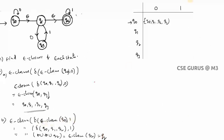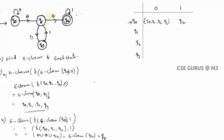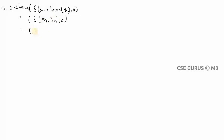For Q1 on input 0: e-closure(Q1) = {Q1, Q2}. Now δ(Q1, 0) = Q3, δ(Q2, 0) = nothing. So we get {Q3}. Then e-closure(Q3) = {Q3}. Therefore the result for Q1 on input 0 is {Q3}.